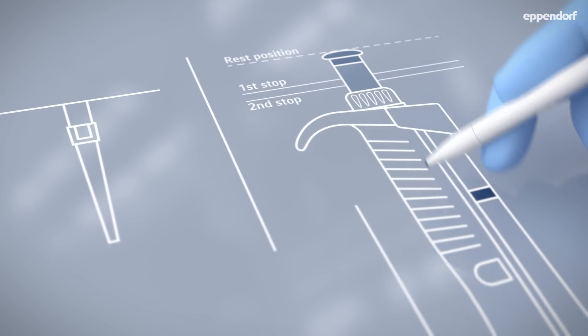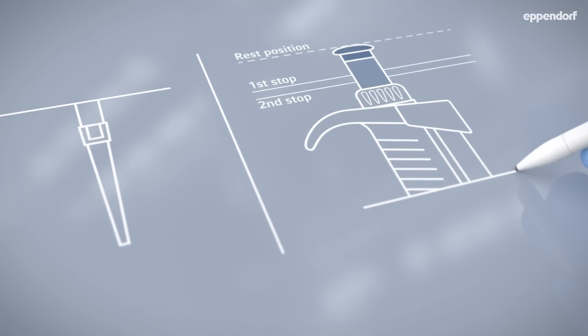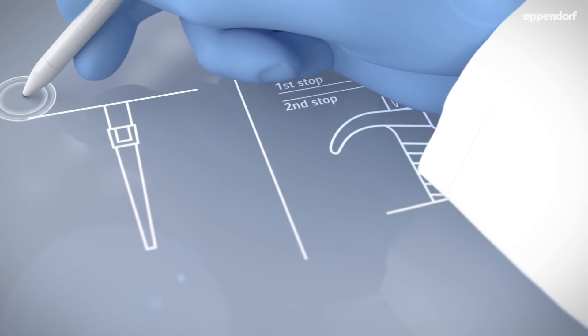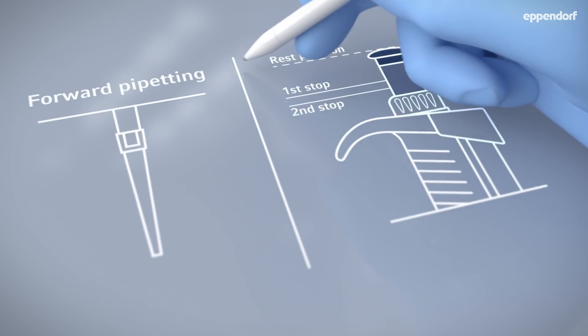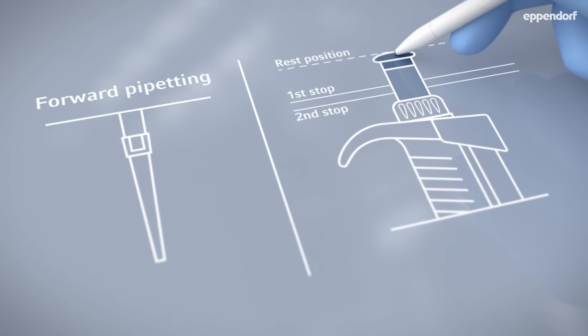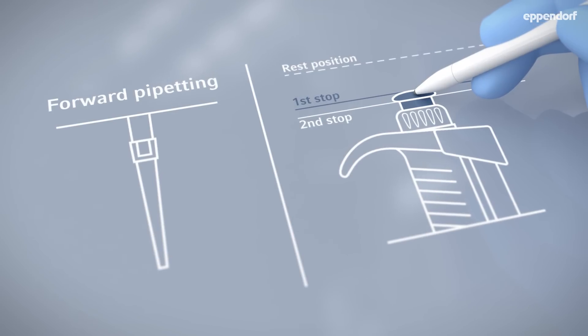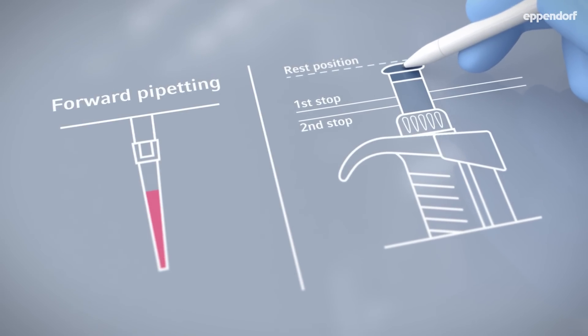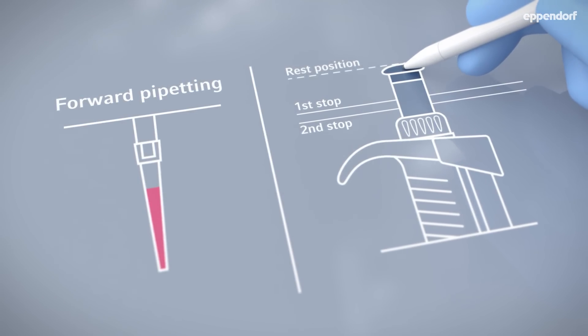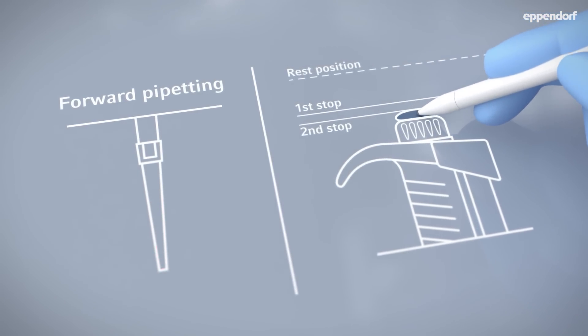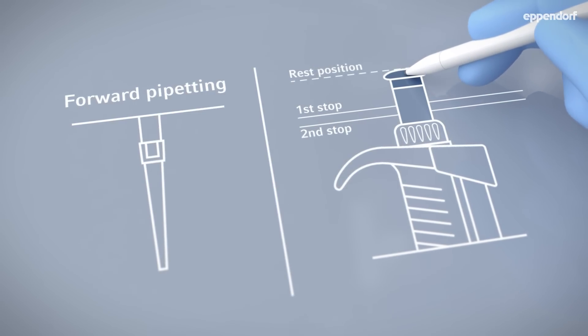Whoops! Now watch the pipette tip on the left as I move the button on the right. With forward pipetting, press the operating button to the first stop. Immerse the tip and move the operating button up to the rest position. Dispense the liquid by pushing the operating button down to the second stop.